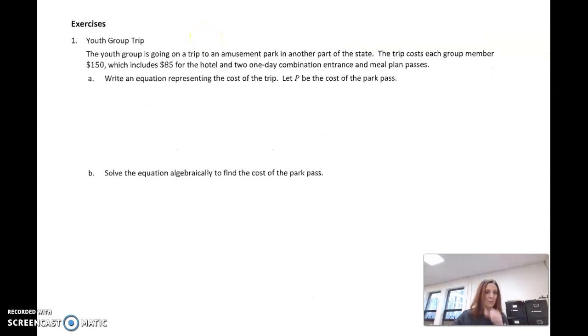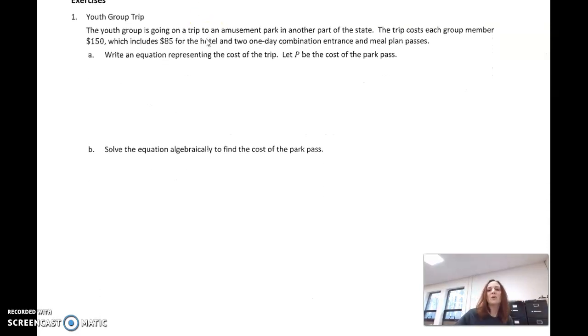So let's look at our first example. The youth group's going on a trip to an amusement park in another part of the state. The trip is going to cost each group member $150. That's $85 for the hotel and two passes. Notice I didn't say one-day combination entrance and meal plan passes because that gets us really confused. We're like thinking, do we have to put a one in there? No, it's just the two passes. What are the passes? One-day combination entrance and meal passes.